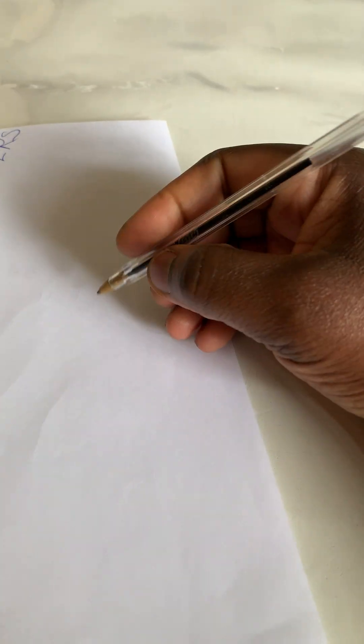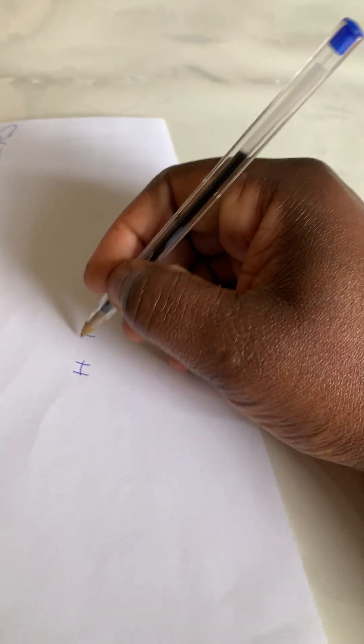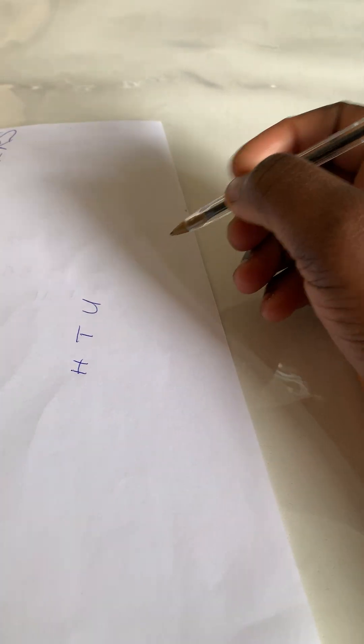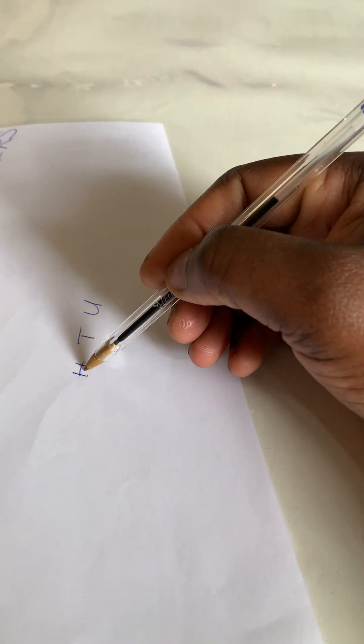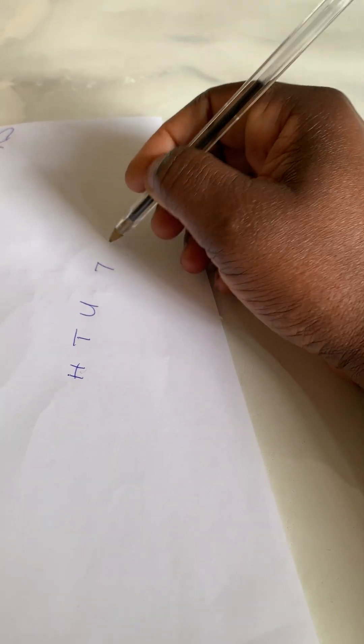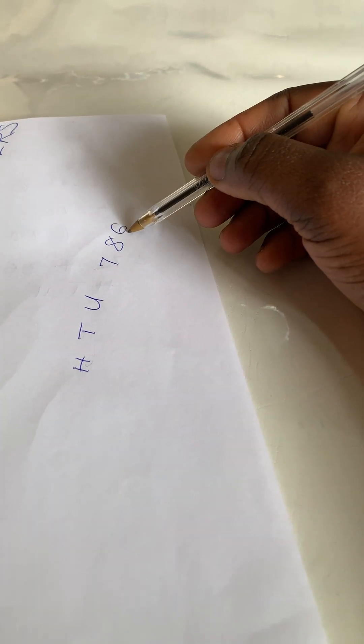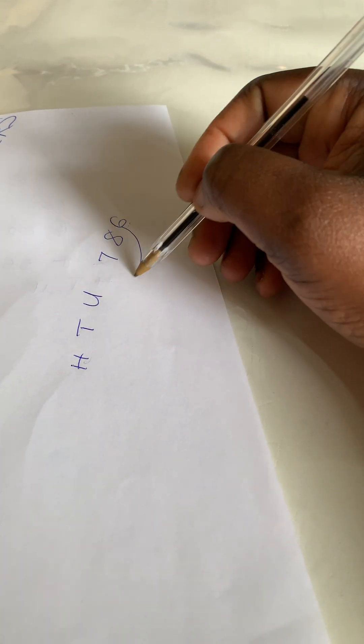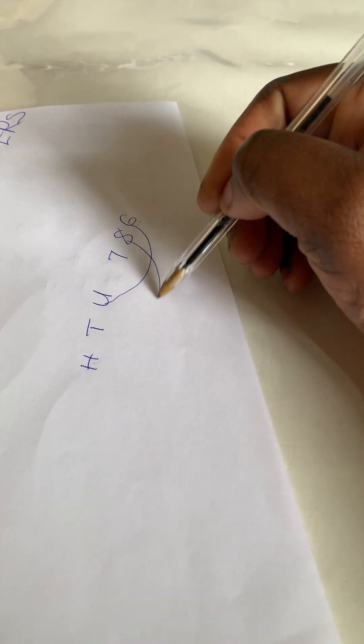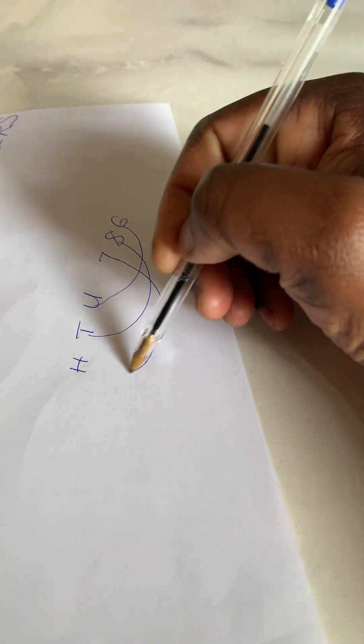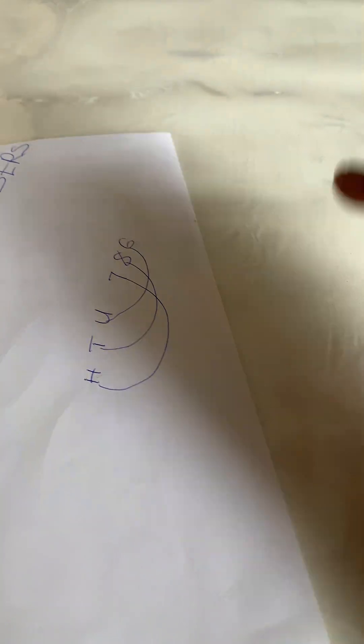If we have three-digit numbers, there's what we call place value, where we have hundreds, tens, and units. Like the three-digit number 786: starting from the right-hand side, 6 is for the units, 8 is for the tens, and 7 is for the hundreds.